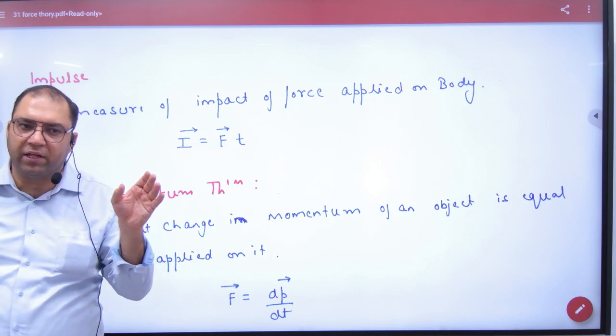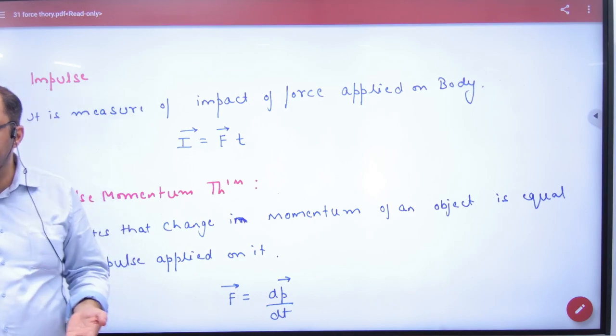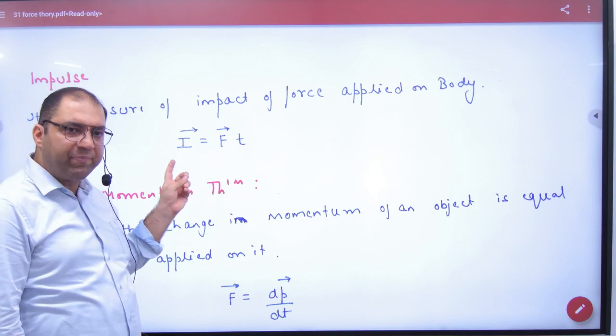If there is more force, then the impulse is more. And if it is more time, then it is more. So in the impact, there are two things: force and time. The product of these two is what is called impulse.